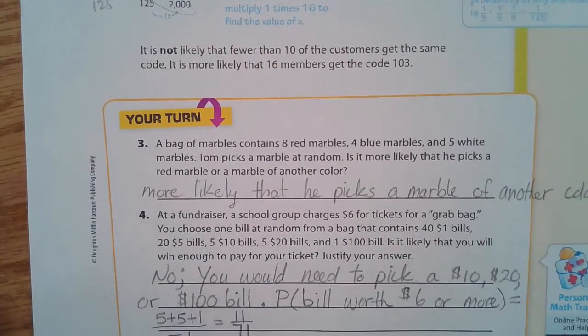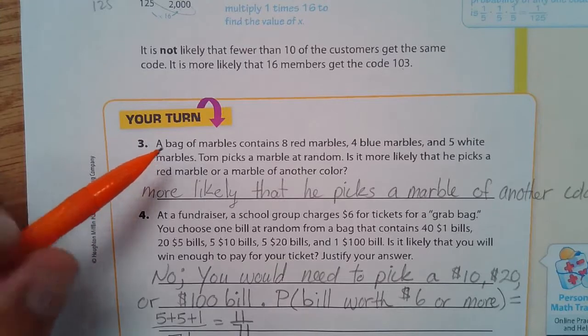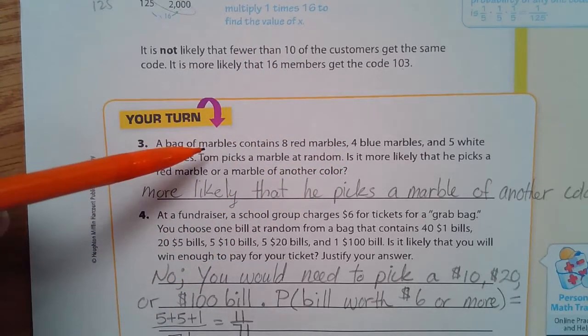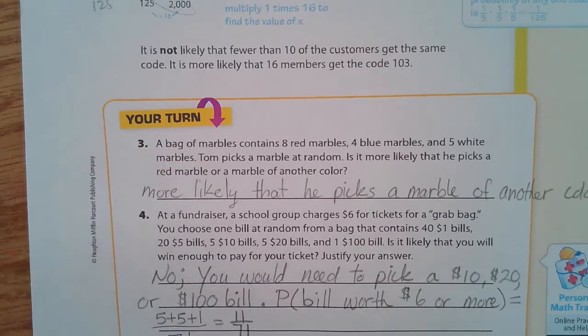Okay, a couple of your turn questions. A bag of marbles contains eight red marbles, four blue and five white. Tom picks a marble at random. Is it more likely that he picks a red marble or a marble of another color?